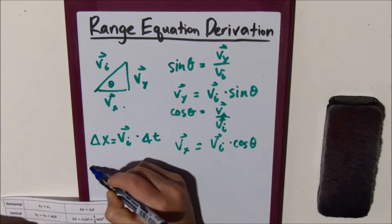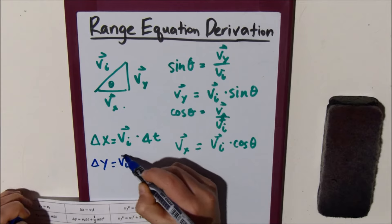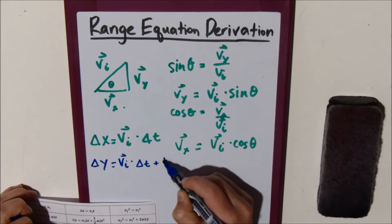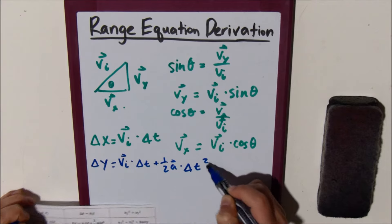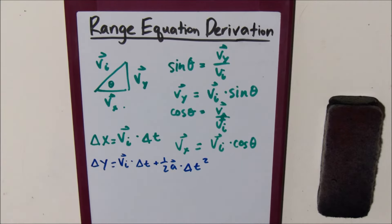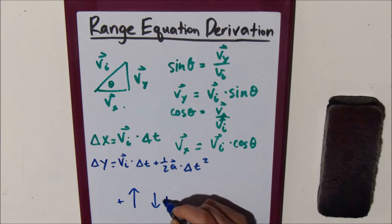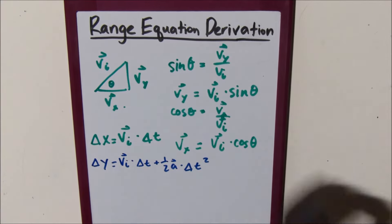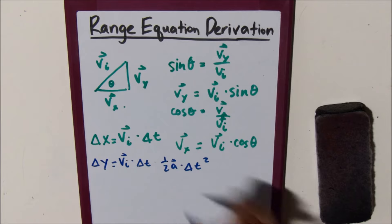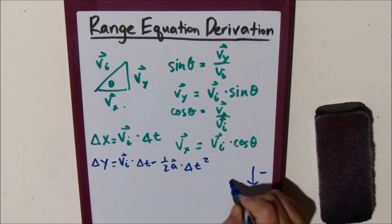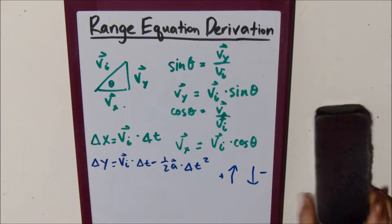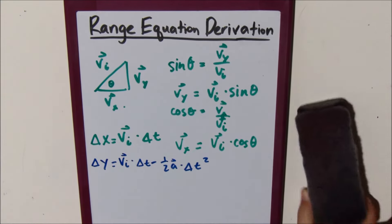The delta y equation is v initial times delta t plus one half acceleration times delta t squared. Often times you can see this written as minus one half acceleration, and that's what we're going to write this time. Depending on what you set your point of reference to — if you say up is positive or down is positive — it really changes whether it's positive or negative. We're going to say it's negative because gravity is negative and up is positive, which is the standard point of reference.